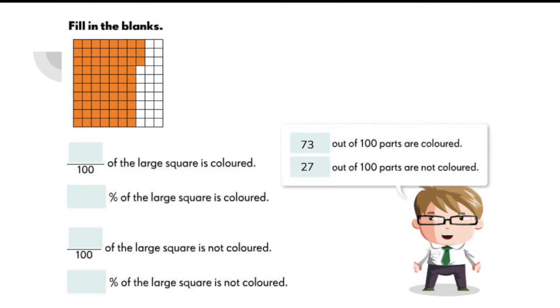Here's another 100 square grid. As you can see, there are 73 colored parts and 27 out of 100 parts are not colored. Again, let's express these in terms of fractions and percentages.